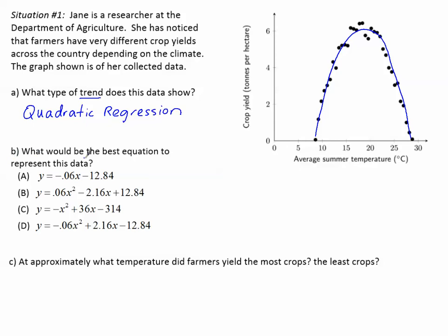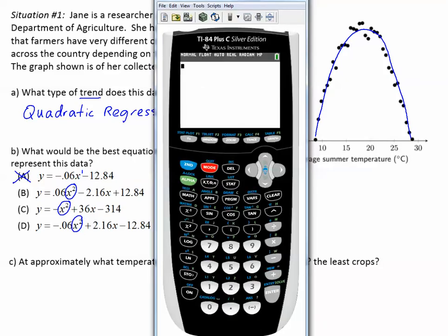Part B. What would be the best equation to represent this data? Well, notice the four choices. The first choice is a straight line because this is x to the first, but we want x squared. So the first choice only has x to the first. It's not going to be the correct choice. For the other ones, we know these are going to be parabolas, but let's go to our calculator to see which is the best graph.